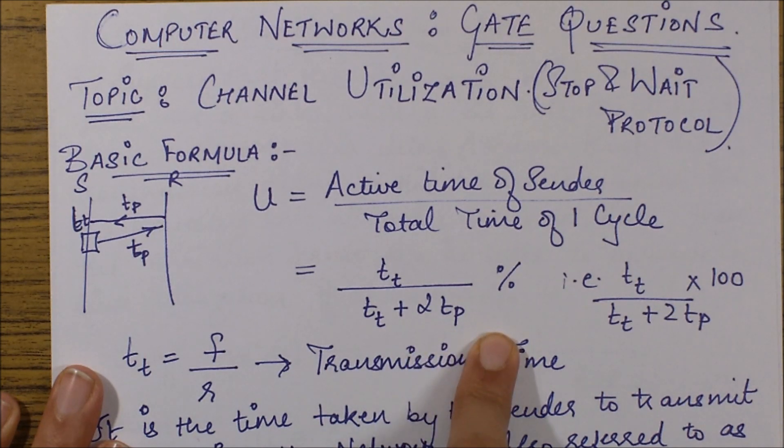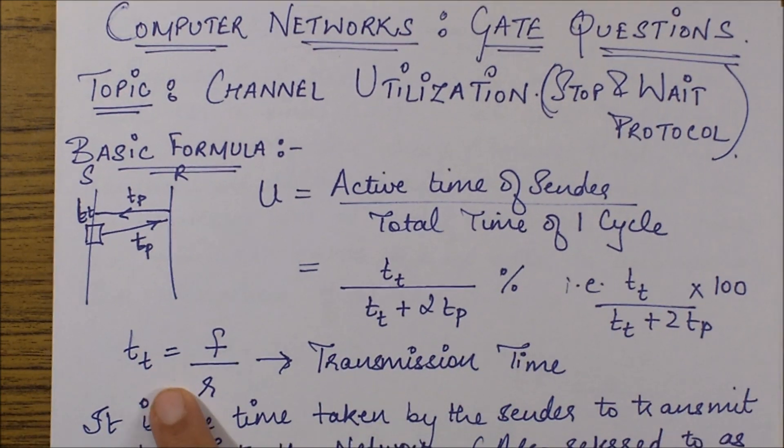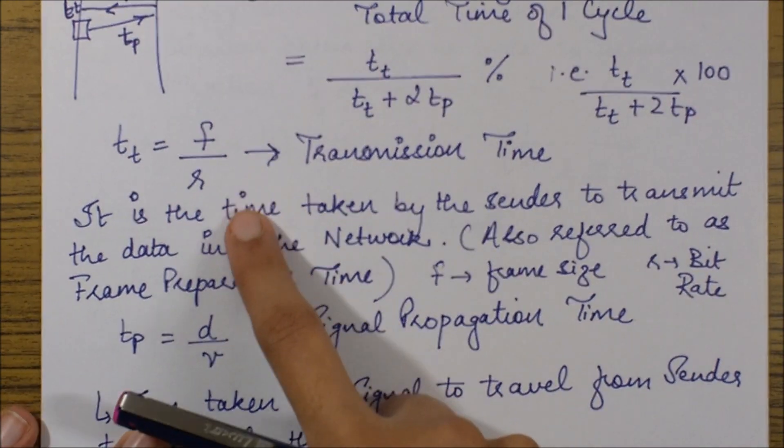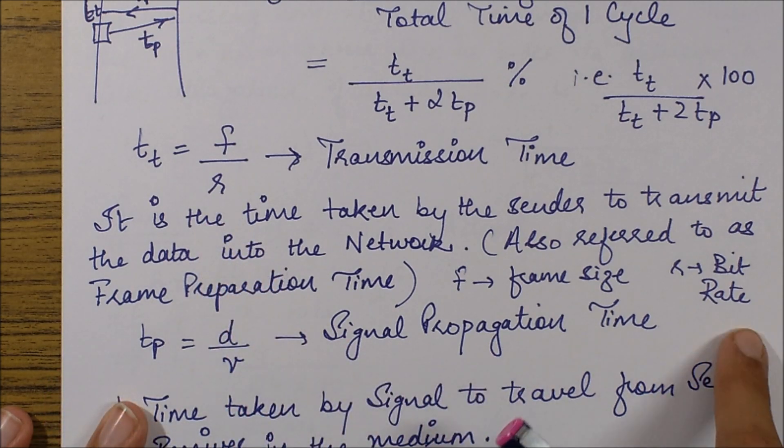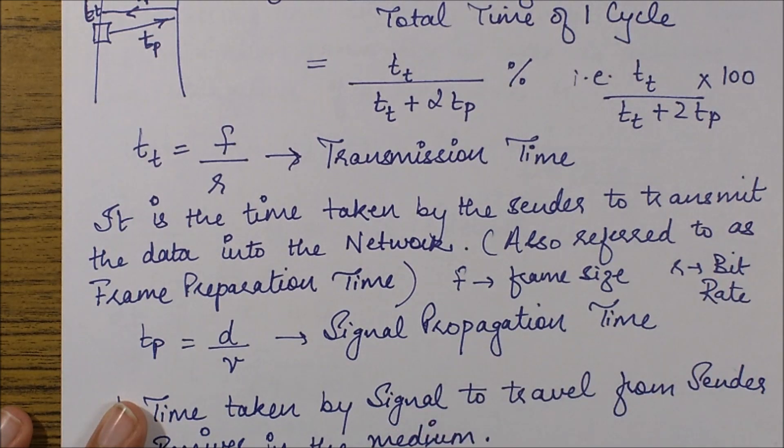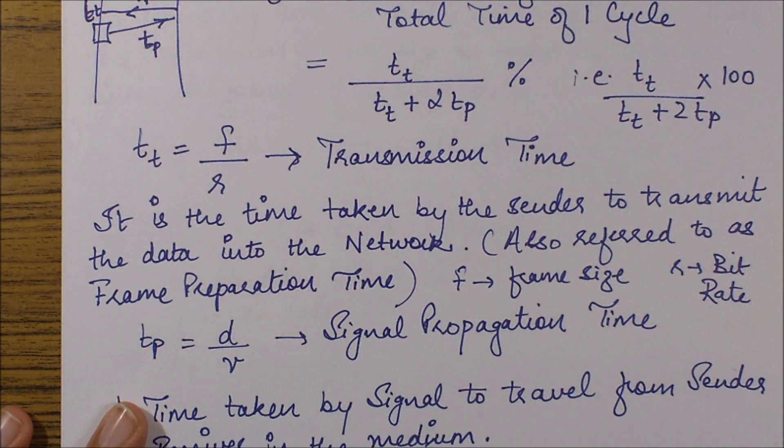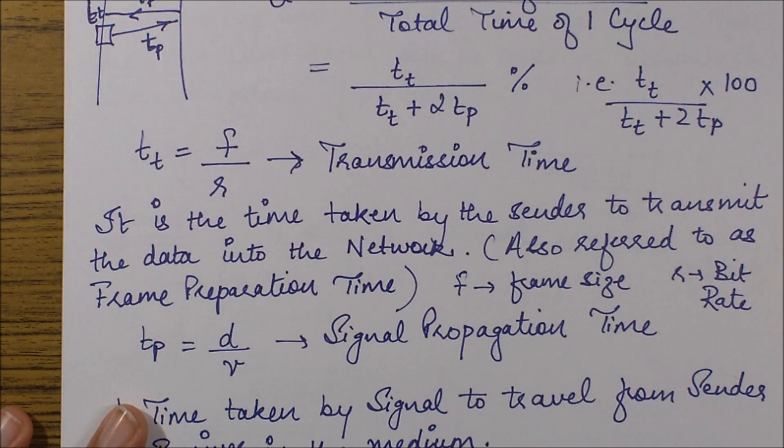This tt is the transmission time and we define it as f by r, where f is the frame size and r is the bit rate, the speed at which bits are being transmitted over the channel.